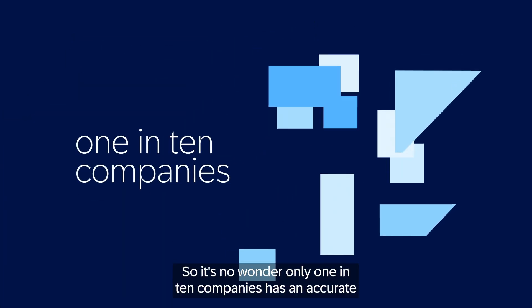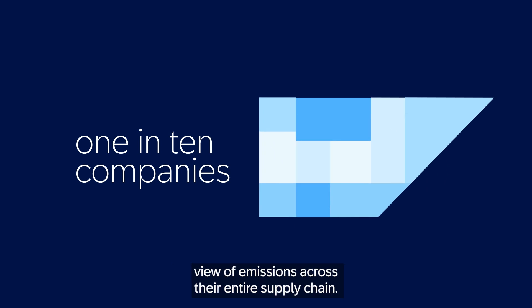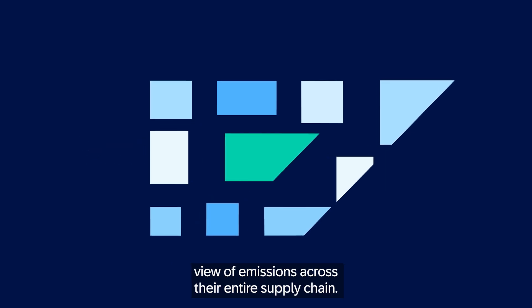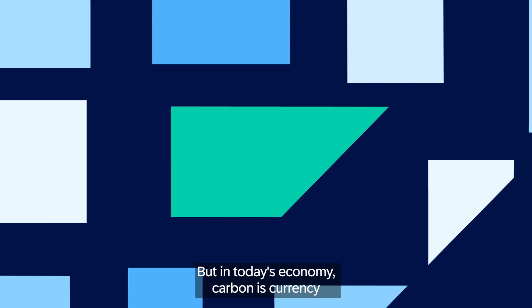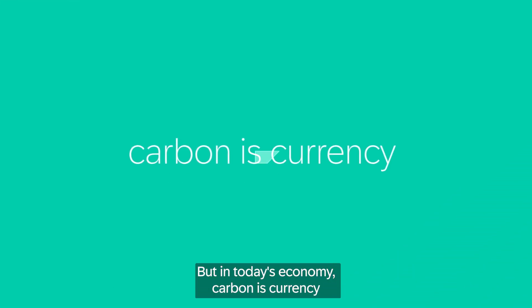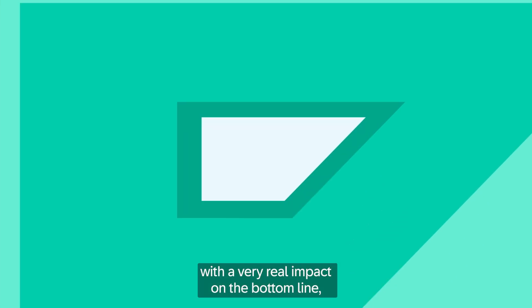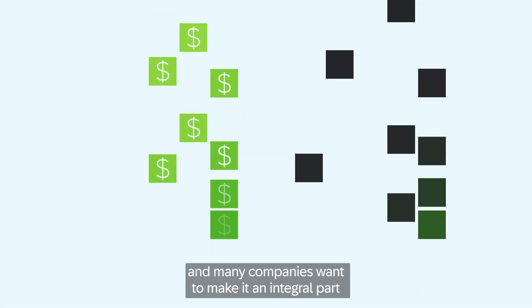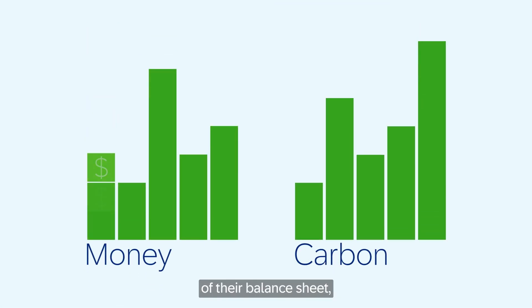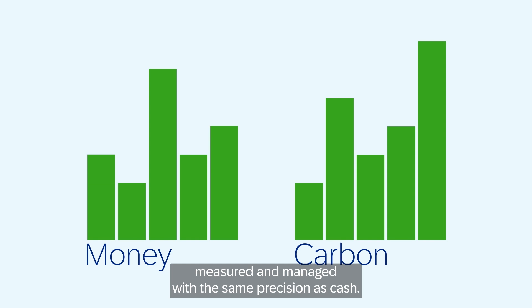So it's no wonder only one in ten companies has an accurate view of emissions across their entire supply chain. But in today's economy, carbon is currency with a very real impact on the bottom line, and many companies want to make it an integral part of their balance sheet, measured and managed with the same precision as cash.